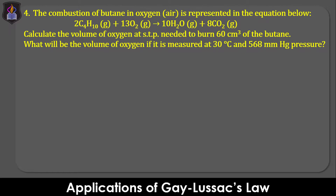Question four: The combustion of butane in oxygen or air is represented in the equation below. Calculate the volume of oxygen at STP needed to burn 60 cm³ of butane. What will be the volume of oxygen if it is measured at 30 degrees Celsius and 568 mmHg pressure? This is a two-in-one question that involves the applications of Gay-Lussac's law and the general gas equation. We will first calculate the volume of oxygen needed to completely burn the given volume of butane at STP, and thereafter use that volume and the given conditions to determine the new volume using the general gas equation.